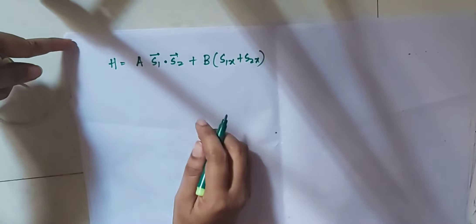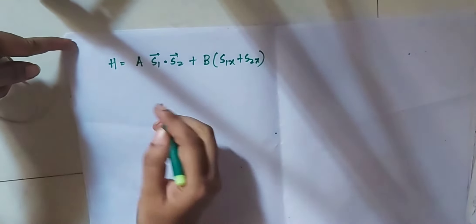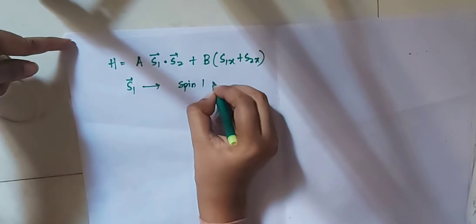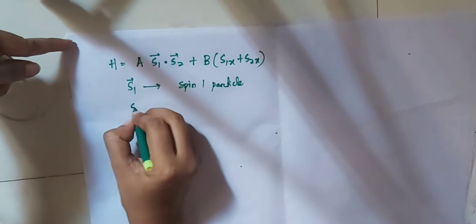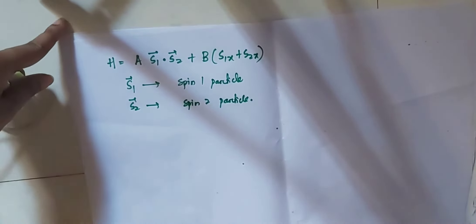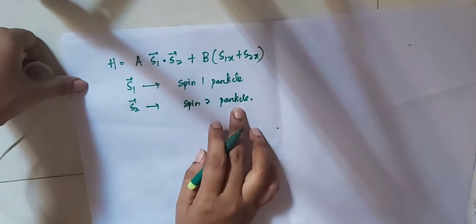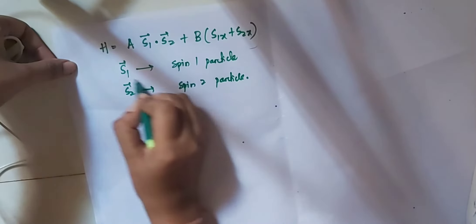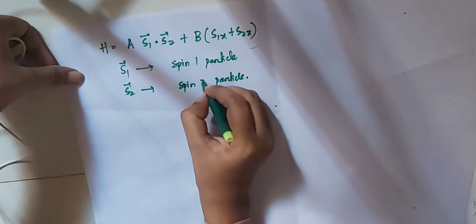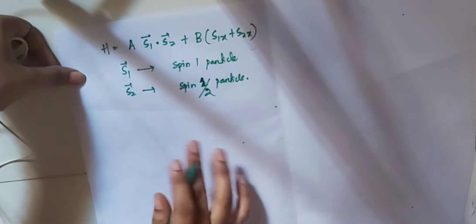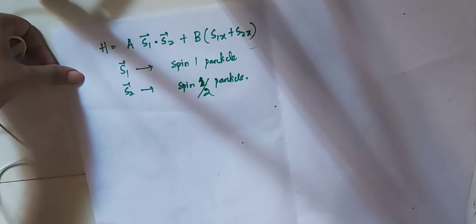S1 is the spin operator for the spin-1 particle and S2 is the spin operator for the spin-1/2 particle. Here a and b are two positive constants. We have to find out the largest eigenvalue of this Hamiltonian. This is a 2019 CSIR-NET question.